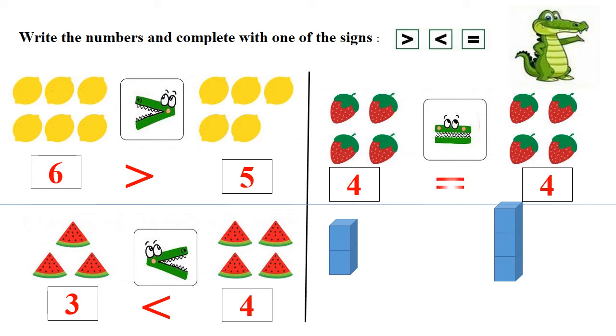Now let's count the cubes. One, two. We have two cubes. One, two, three. Here we have three cubes. So Charlie is going to open his mouth to the bigger number, and we are going to use the sign that opens to the bigger number.